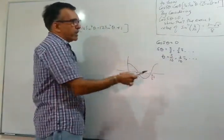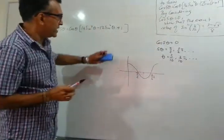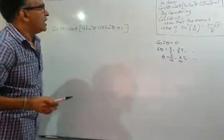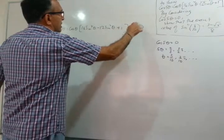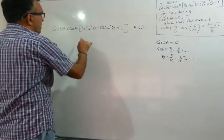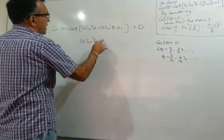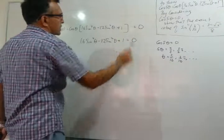5θ equals π over 2, so θ you divide by 5, you'll get π over 10. So you're obviously on the right track, you know where this π over 10 is coming from. Let me erase this. If you set this equal to 0, we can write 16 sine to the power of 4θ minus 12 sine squared θ plus 1 equals 0.